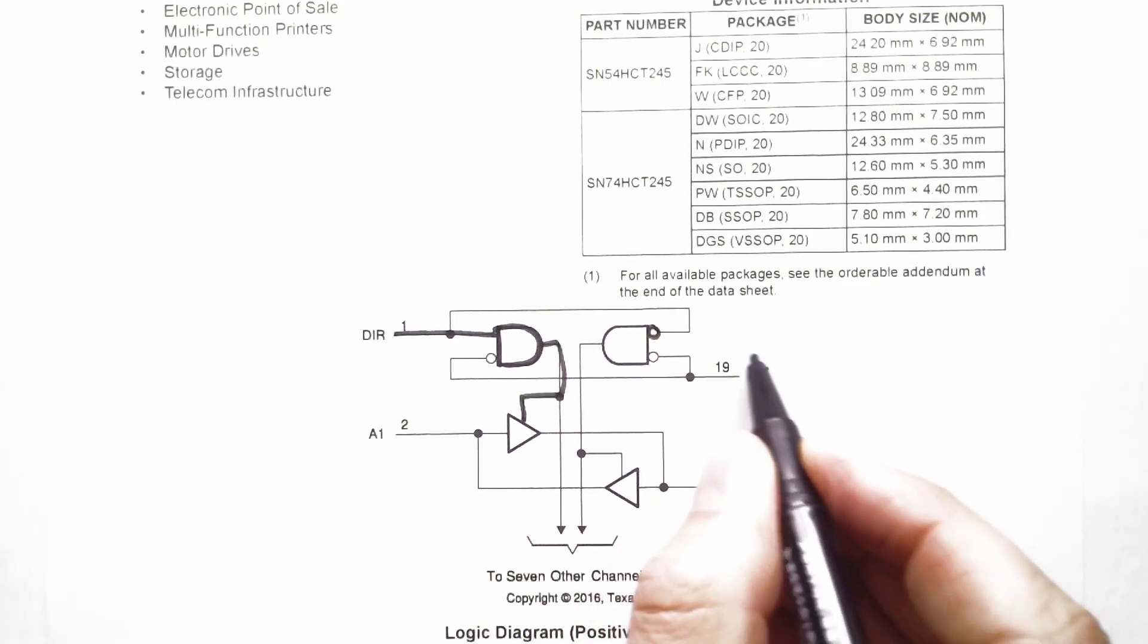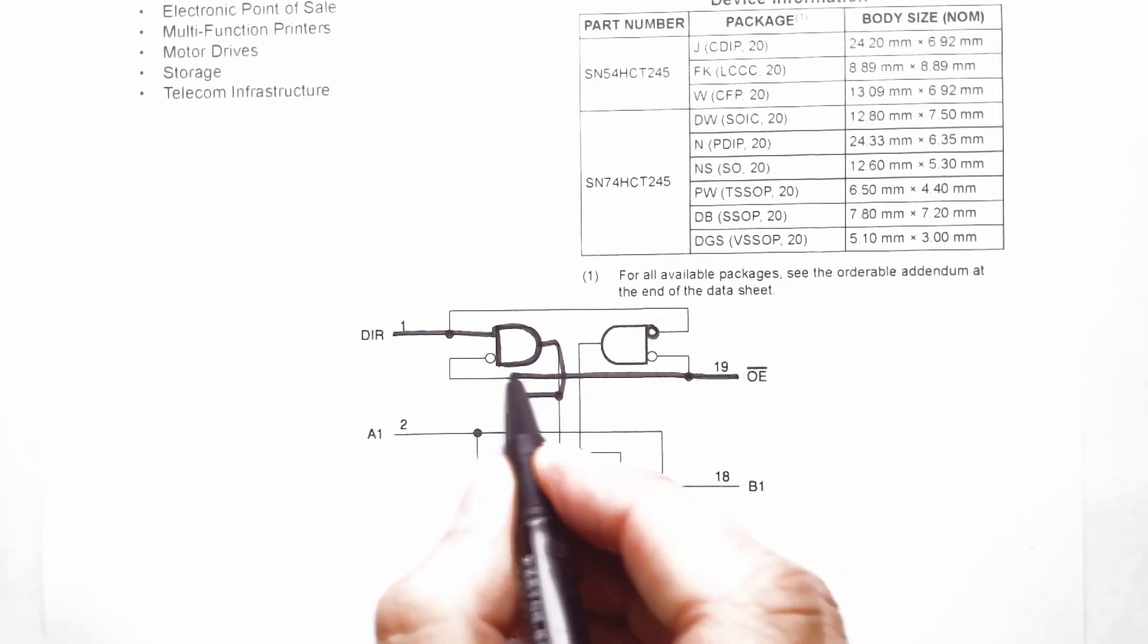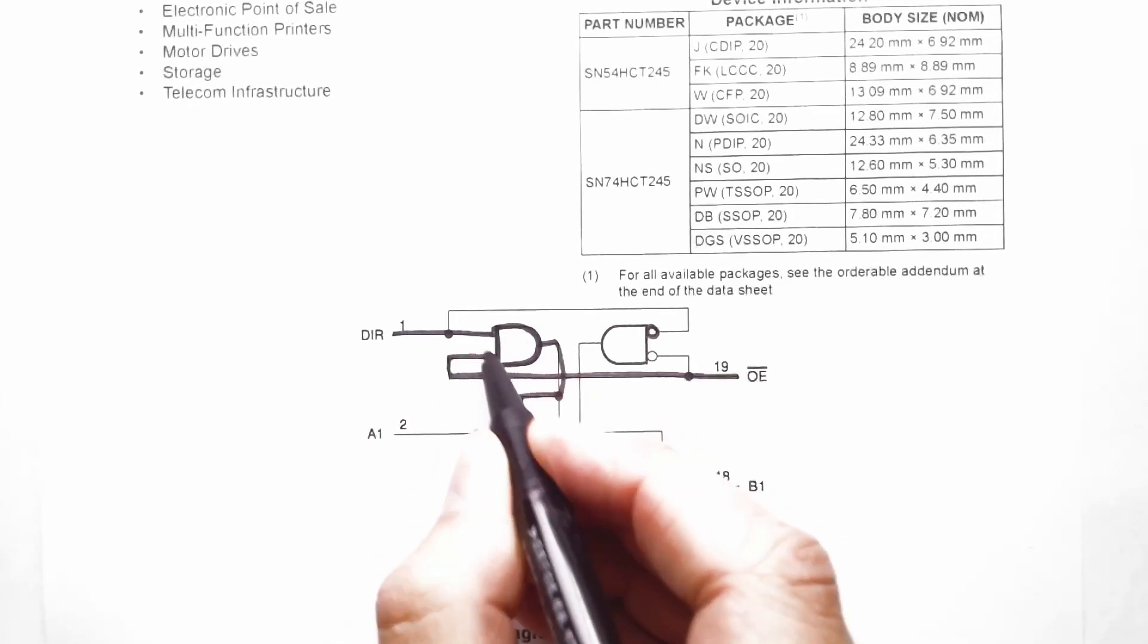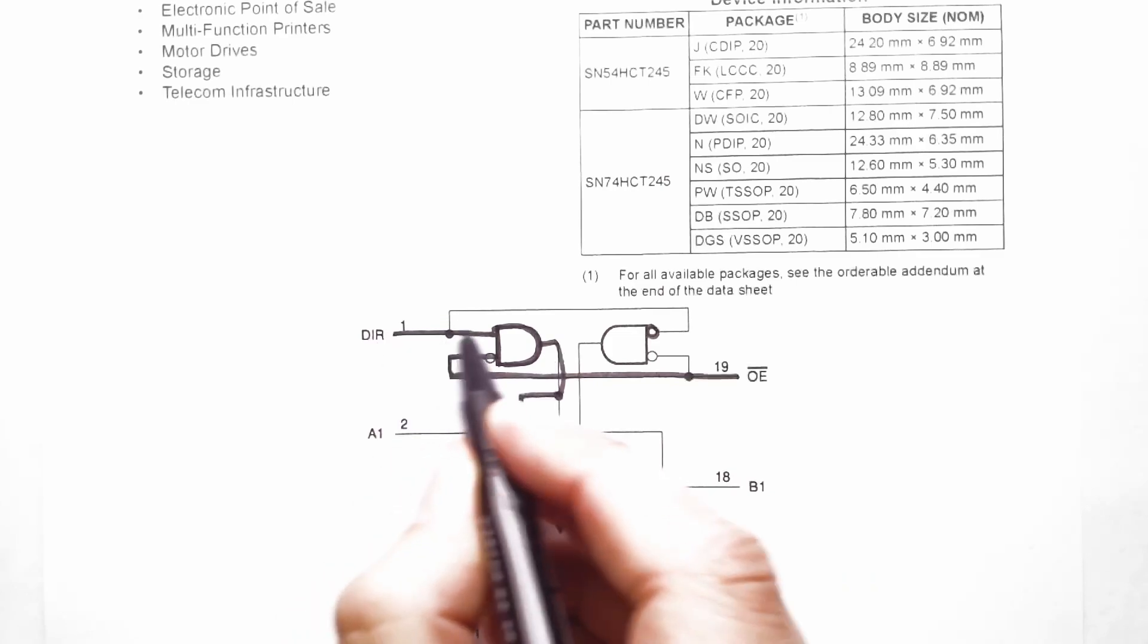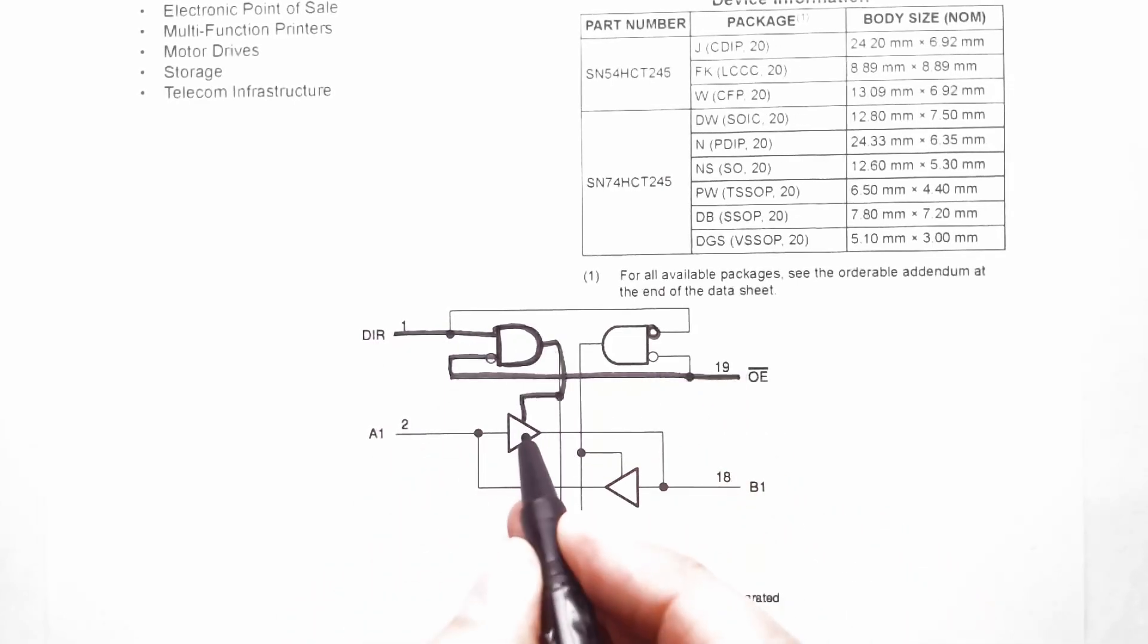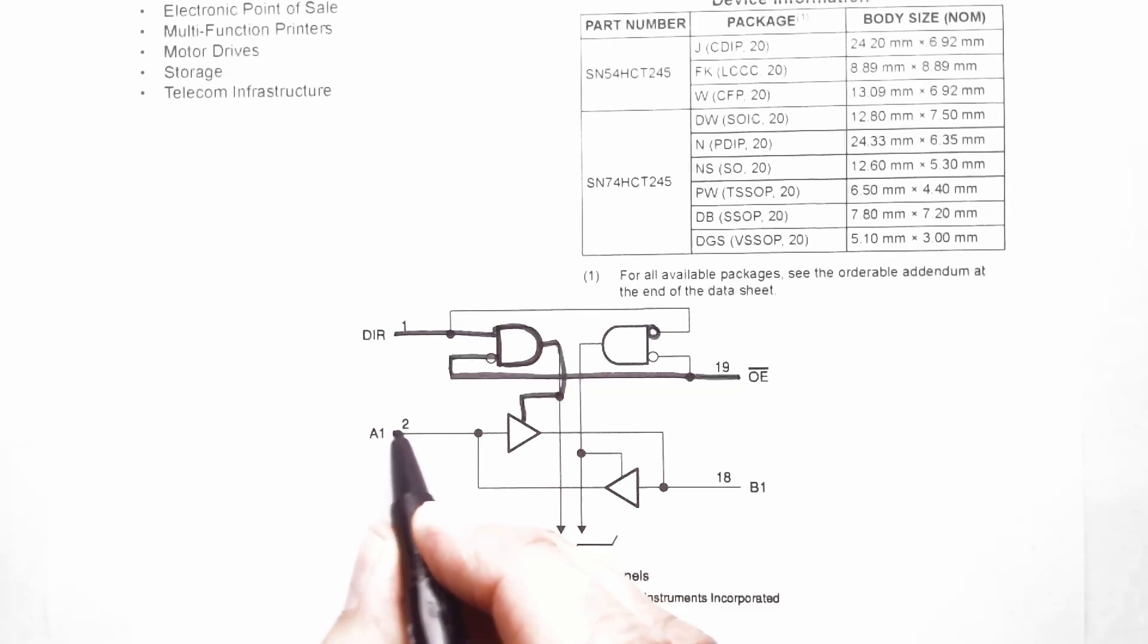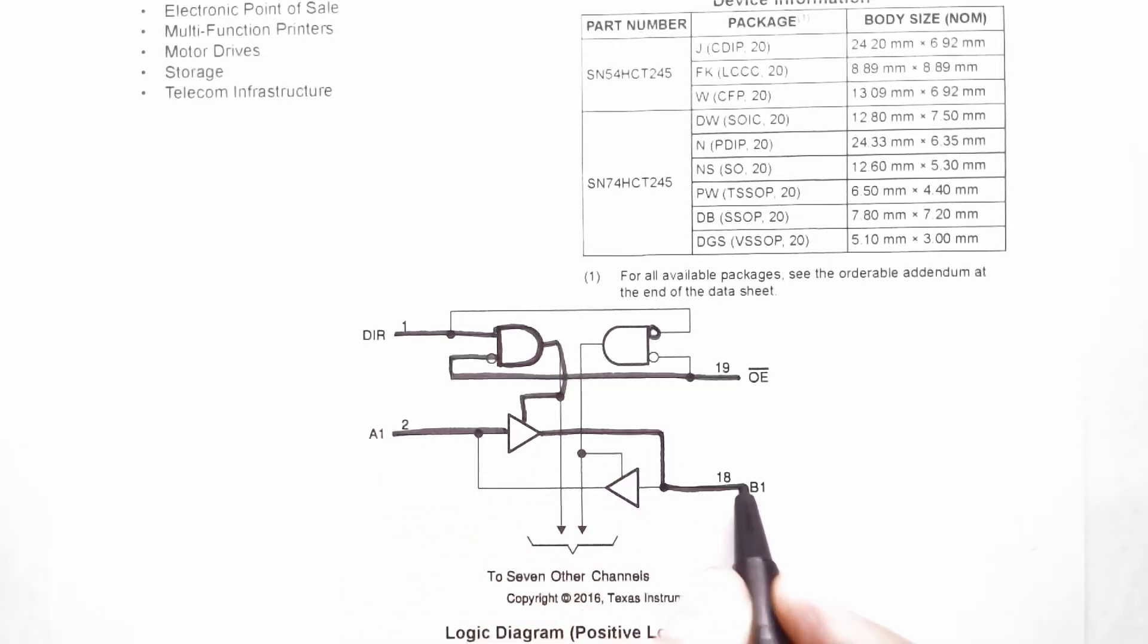We also have an output enable input that we need to consider. This is an active low signal, so if we have a low signal coming in here it will activate this AND gate along with the direction. So we need the direction set to 1 and the output enable set to 0 and then this tri-state buffer will be active. Our A can then pass through the tri-state buffer and output to B.